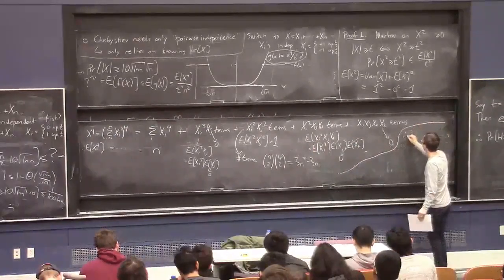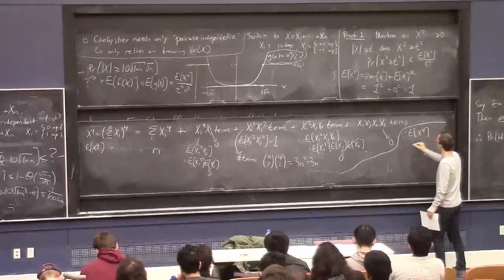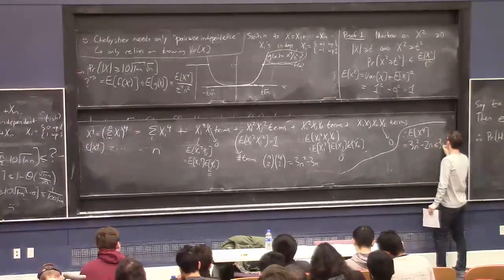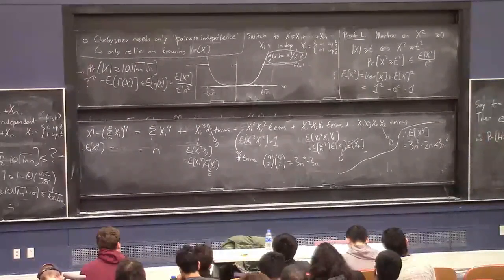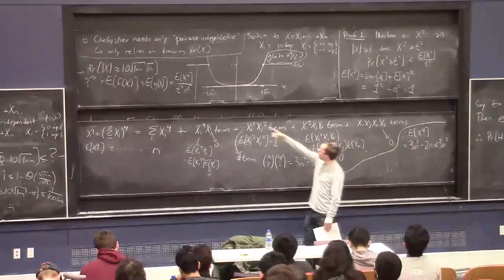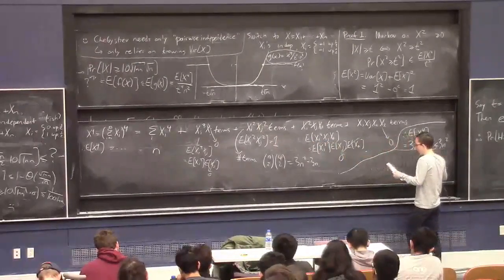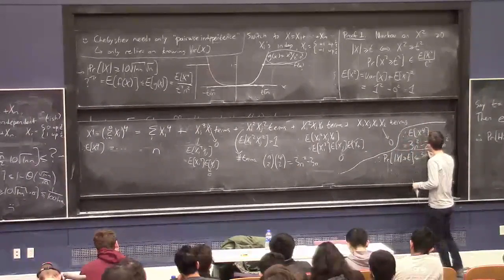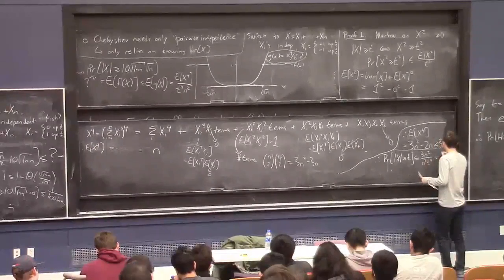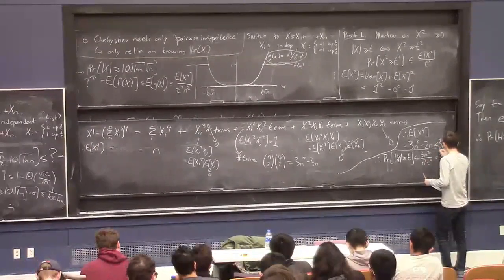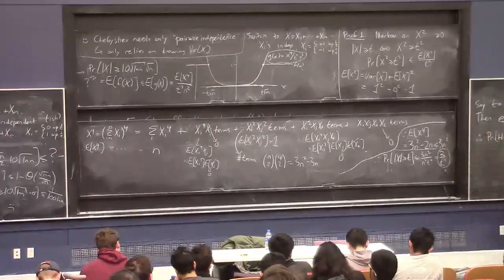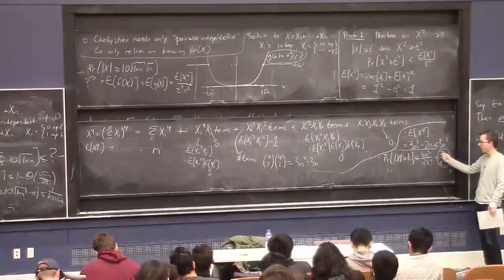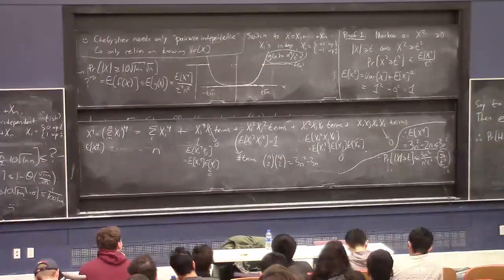In conclusion, with some work, we deduce that E[x^4] equals 3n squared minus 2n — let's just say it's at most 3n squared. Plugging that in, we get that the probability that the absolute value of x is at least t root n is at most 3n squared over n squared t to the fourth, which is 3 over t to the fourth. Chebyshev would have given us 1 over t squared. So for large t, this is much better.